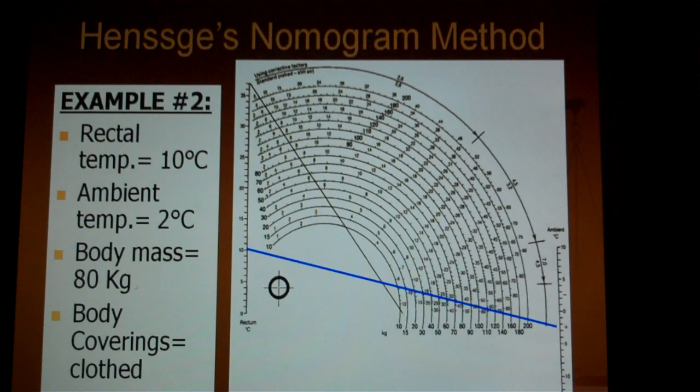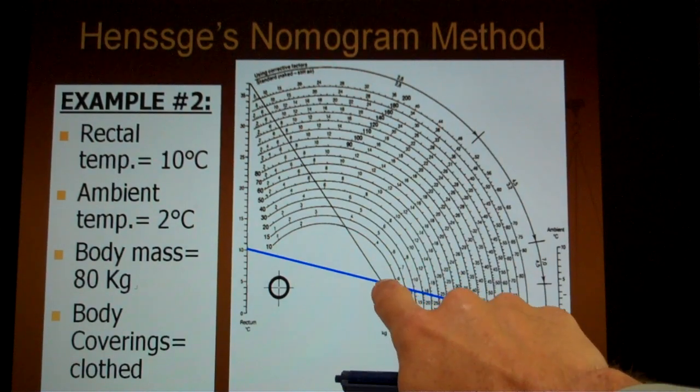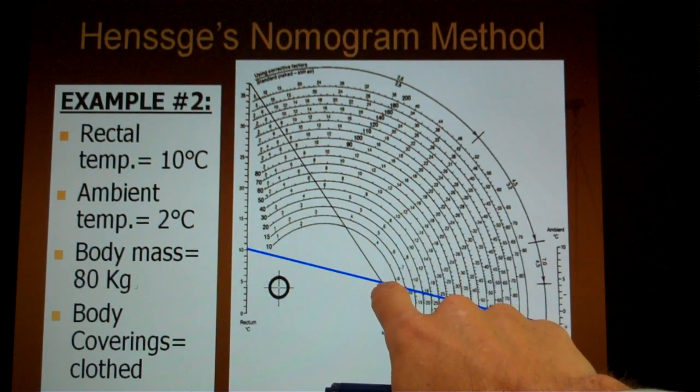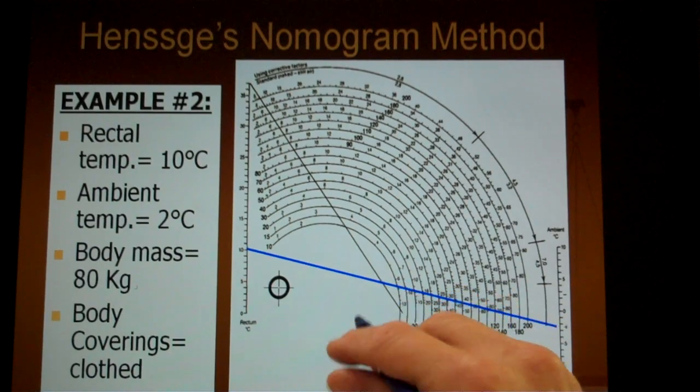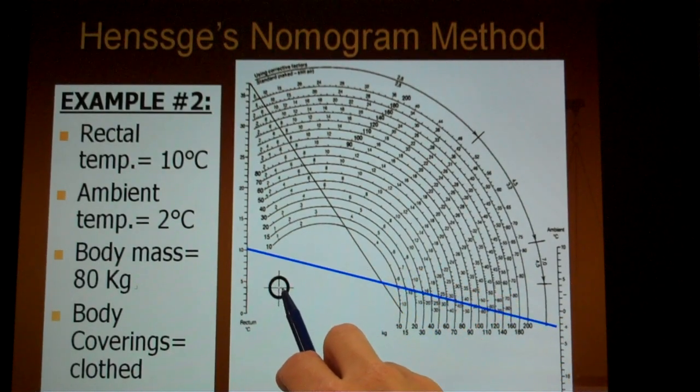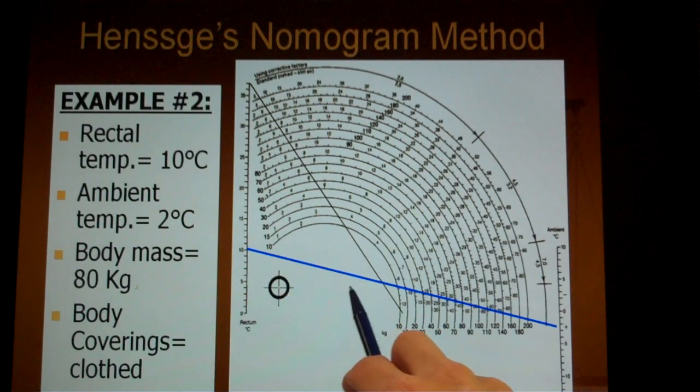Once you've come up with that line, you need to identify the point at which the line you just made intersects this line that is part of the nomogram. So right here, you'll see that my blue line now intersects the original line that was part of the nomogram. Now you're going to go from the center of this target through that point at which your line intersects the one that is part of the nomogram. So in this case, I'm going to use a red line going out through there and extending it all the way to the end of the nomogram itself.